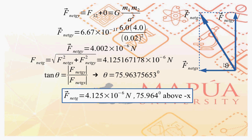For the direction, let angle theta be based on the x-axis. The position of angle theta in this case is above the negative x-axis. We use the tangent function: tangent theta equals the opposite (F_net_g_y) over the adjacent (absolute value of F_net_g_x). Taking the inverse tangent, angle theta is 75.96375653 degrees. Putting it all together: F_net_g equals 4.125 times 10 to the negative 6 newtons, directed 75.964 degrees above the negative x-axis.